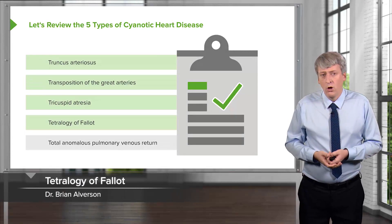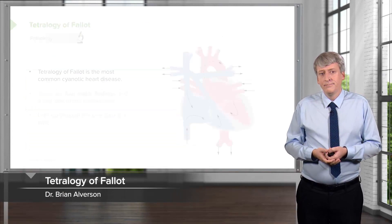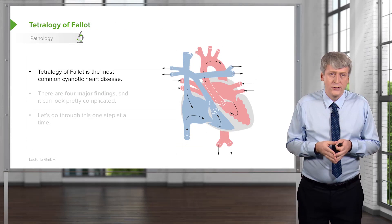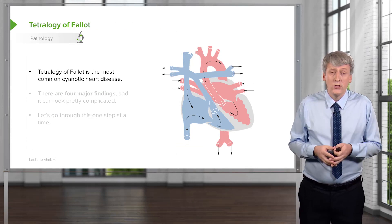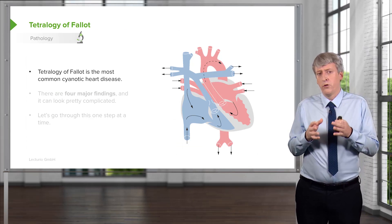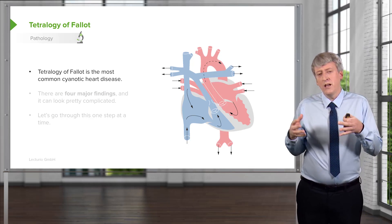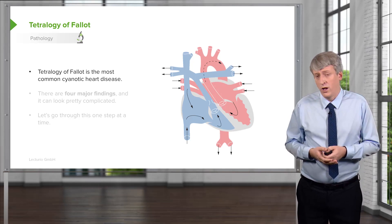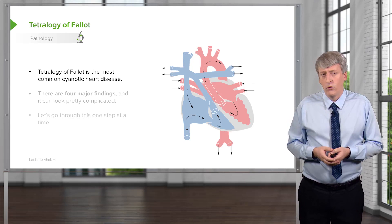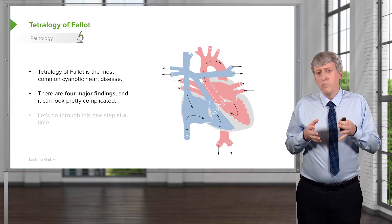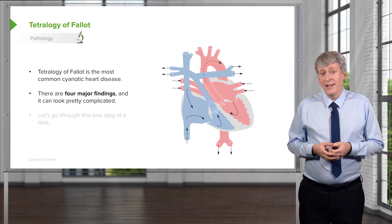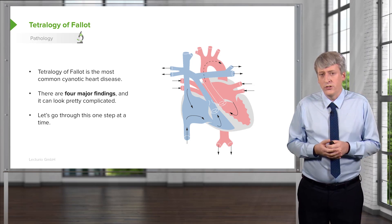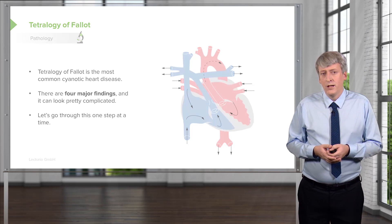Let's move on to Tetralogy of Fallot. Tetralogy of Fallot is the most common cyanotic heart disease and it frequently shows up on multiple choice tests. It's important to memorize the four findings in the tetralogy, and I'm going to go through them now for you. There are four major findings and it can look pretty complicated, but if I go through it one step at a time, I think you'll understand it.